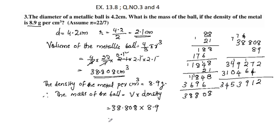The multiplication gives us 3, 4, 5, 3, 9, 1, 2. The decimal point is placed 4 positions in.